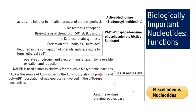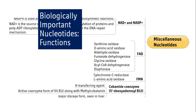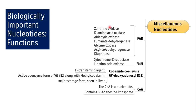NAD and NADP operate as hydrogen and electron transfer agents by reversible oxidation and reduction. NADPH is almost exclusively used for reductive biosynthetic reactions like lipid synthesis. NADPH is also a source of ADP-ribose for ADP-ribosylation of proteins and poly-ADP-ribosylation of nucleoproteins involved in DNA repair mechanisms. FAD is a coenzyme of many metabolic enzymes including xanthine oxidase, D-amino acid oxidase, aldehyde oxidase, fumarate dehydrogenase, glycine oxidase, acyl-CoA dehydrogenase, and diaphorase. FMN is a coenzyme for cytochrome C reductase and L-amino acid oxidase.